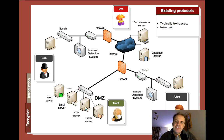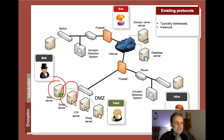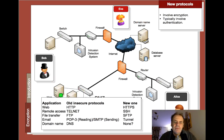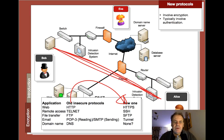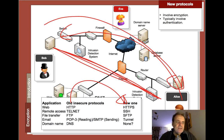Many protocols created initially didn't have security in mind. Our network infrastructure's original protocols for web, email, FTP, and DNS were insecure. We've moved from HTTP and are now looking towards HTTPS, SSH, SFTP, and so on, to secure communications between Bob and Alice and prove the identity of at least one side to the other. This involves encryption and authentication.